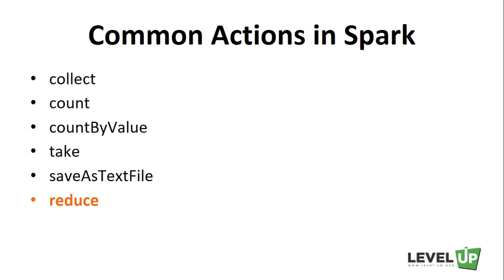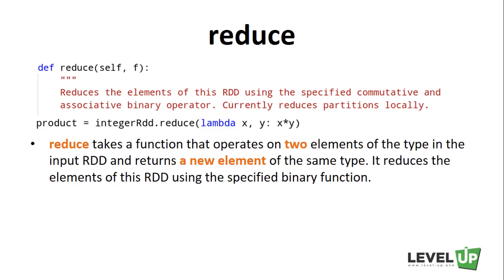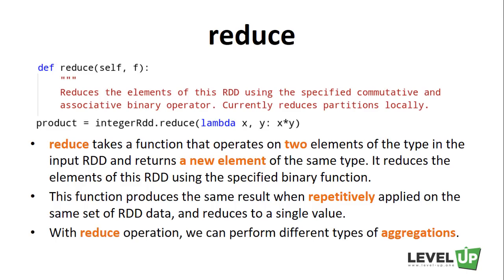The last action we want to talk about is reduce. Reduce is probably the most common action in a Spark program. The reduce action takes a function that operates on two elements of the type in the input RDD and returns a new element of the same type. The Spark RDD reduce function reduces the elements of this RDD using the specified binary function, which produces the same result when repetitively applied on the same set of RDD data, reducing to a single value. With the reduce operation, we can easily sum up all elements of an RDD, count the total number of elements, or perform other types of aggregations.